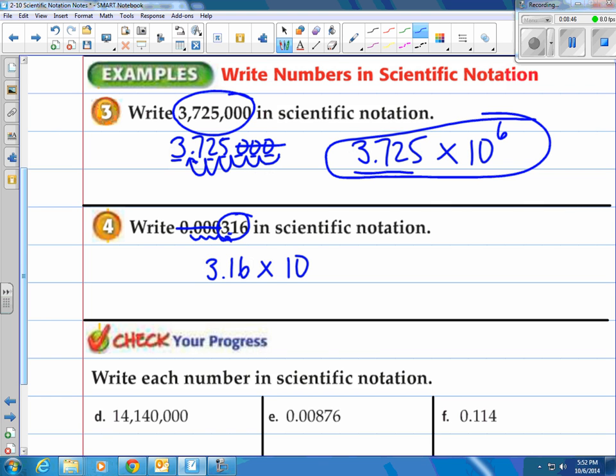Four spaces. This number itself, the number itself is a number less than 1, so we'll have a negative exponent here. So the answer is 3.16 times 10 to the negative fourth power.